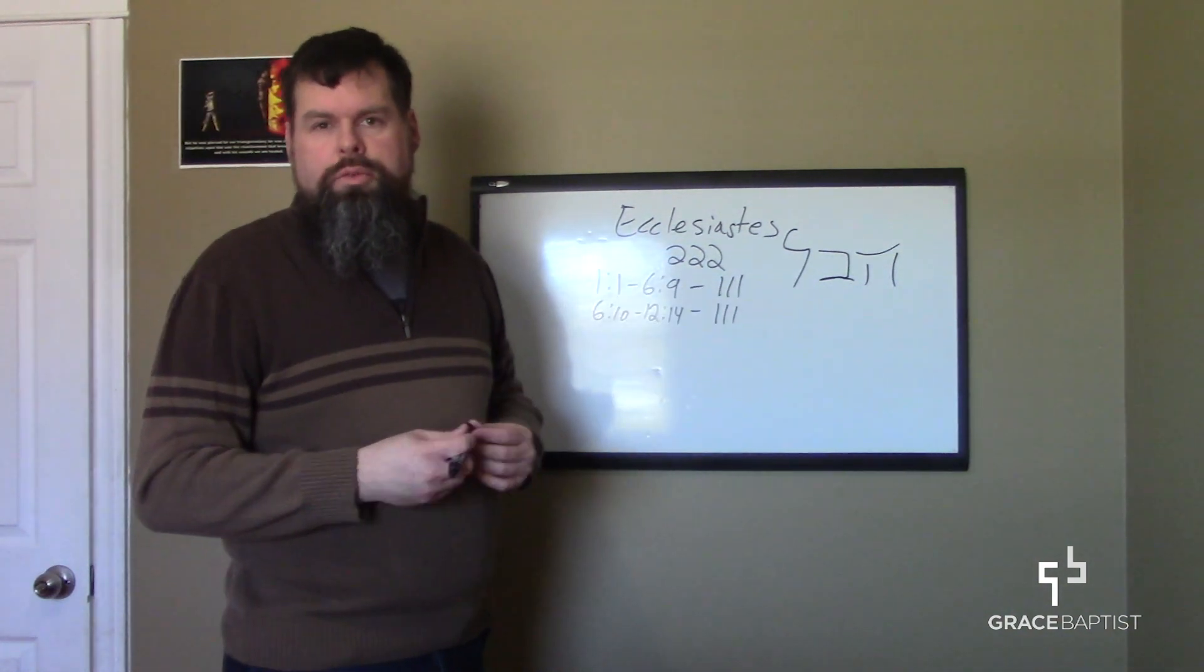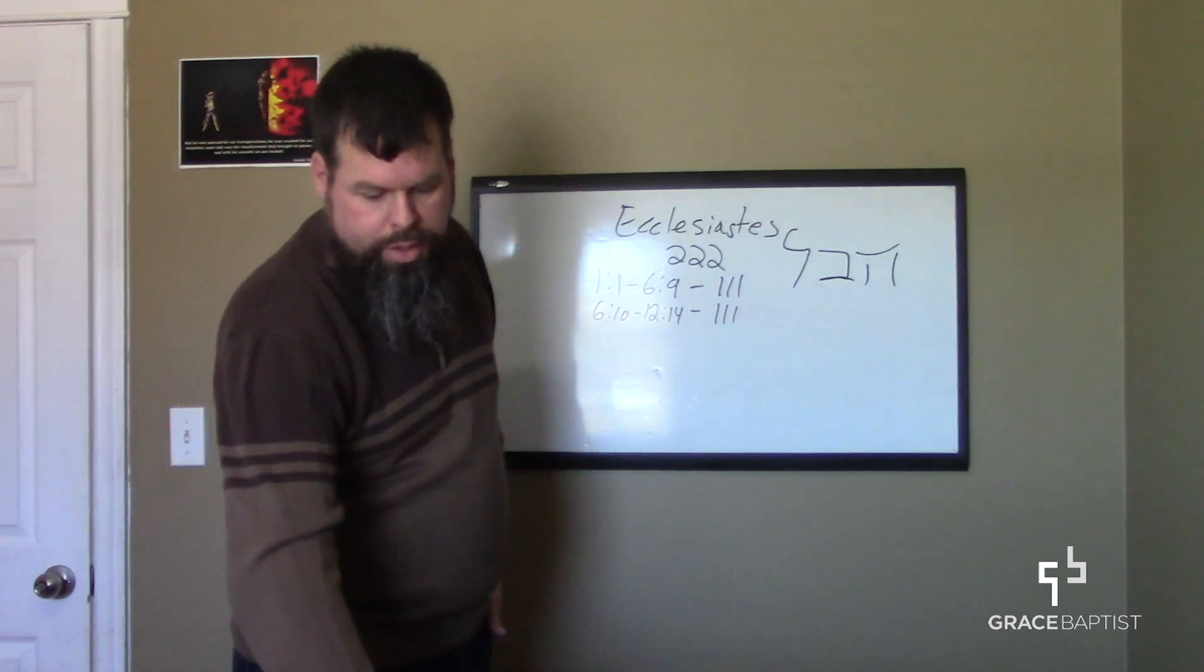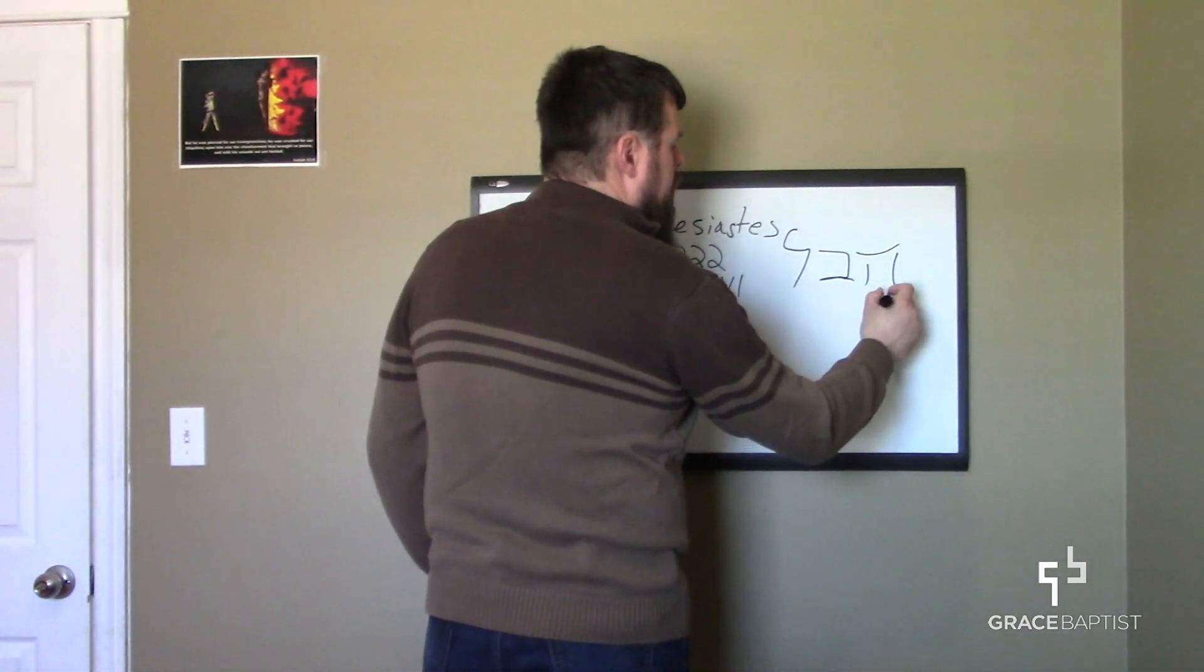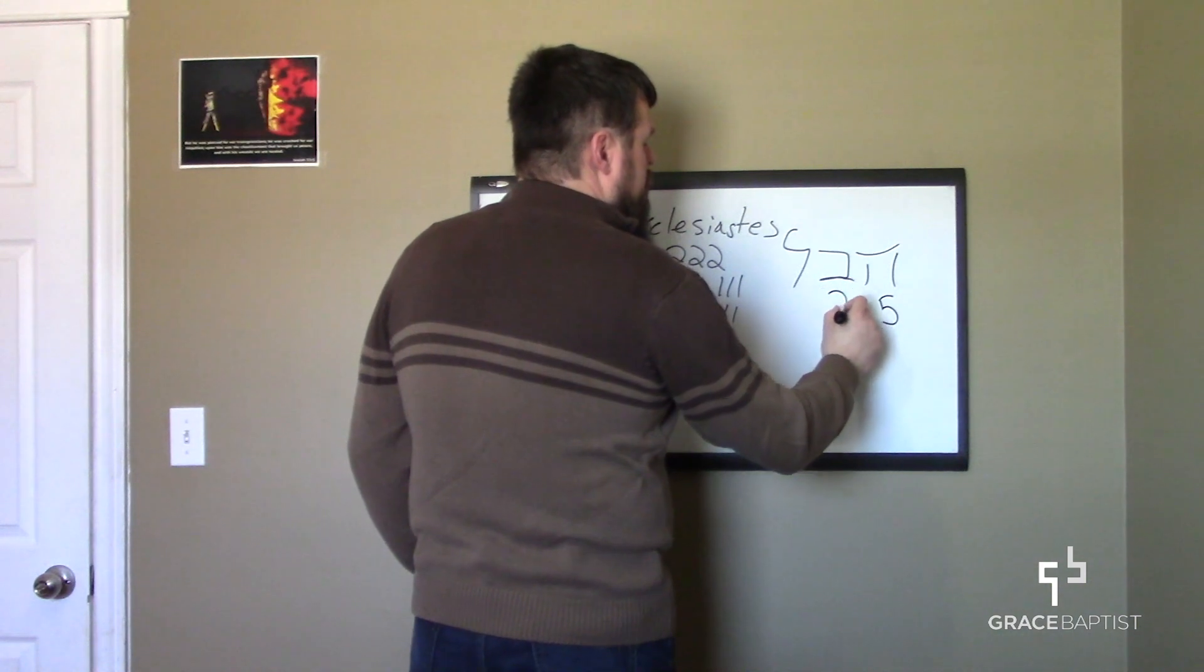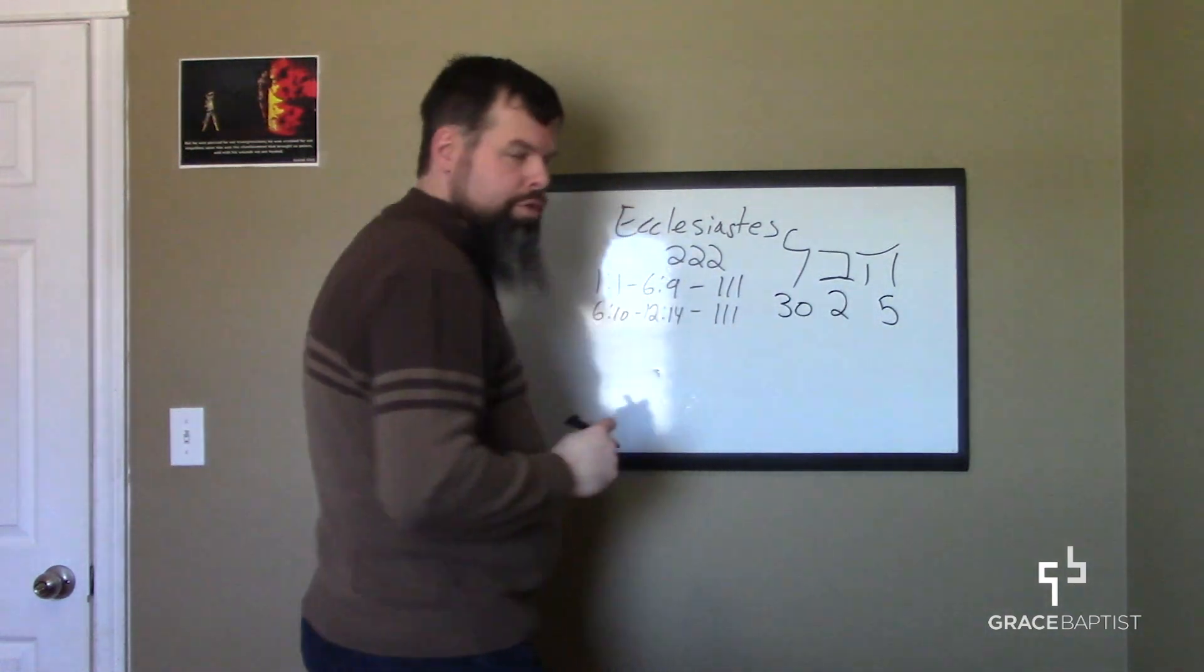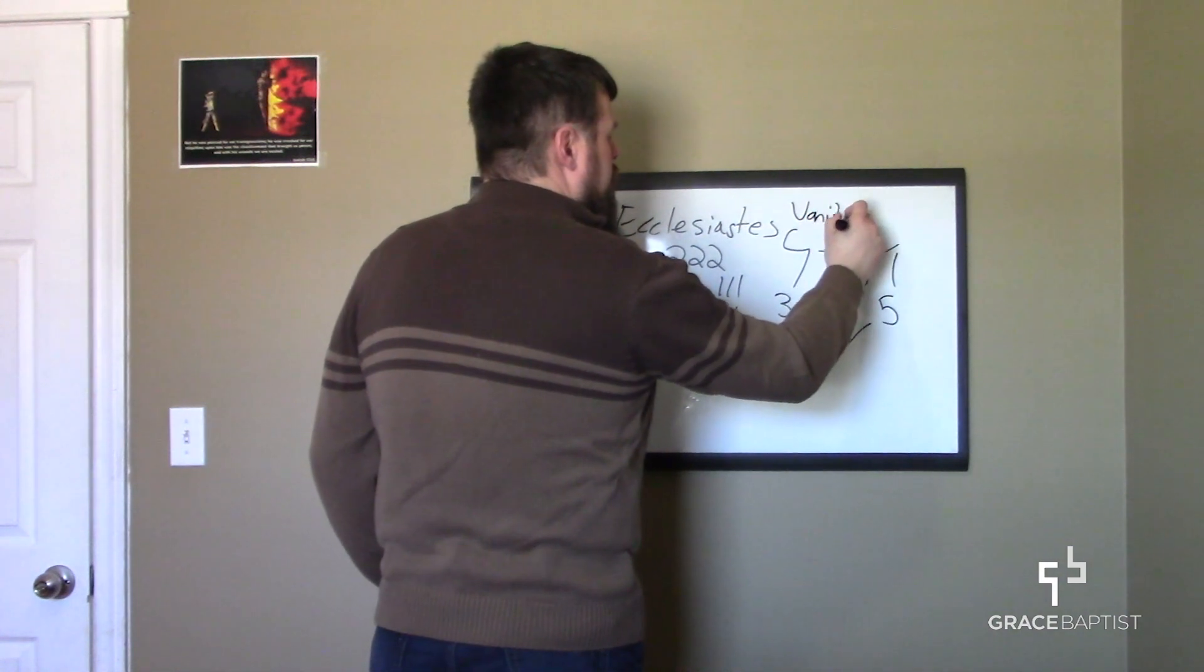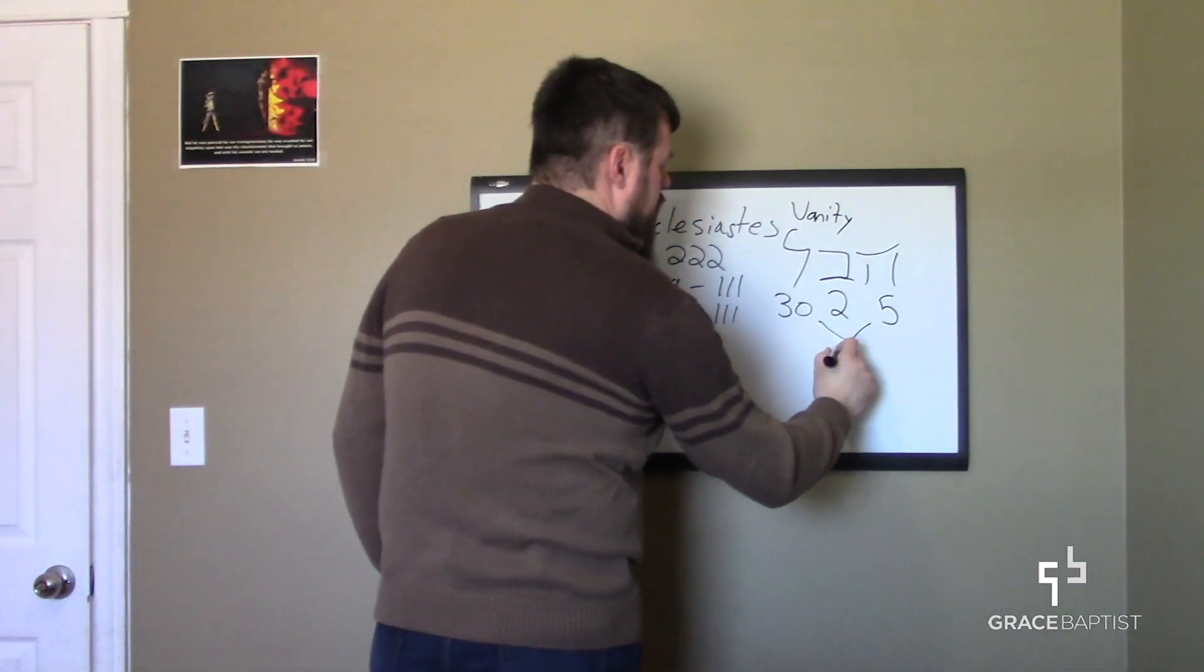In the ancient Hebrew numbering system, each number had a numerical value assigned to it. And so if you do a little bit of research, you can kind of find out what those are. But hey has a numerical value of 5, bet has a numerical value of 2, and then lamed has a numerical value of 30. And so the numerical value of this word vanity that we know in Ecclesiastes 1:2, and we've seen it throughout the book, the numerical value is 37.